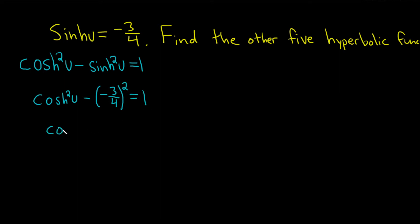So we have cosh²(u) minus. When you square this, because it's negative, it's going to become positive. So you square the 3, so you get 9, and square the 4, so you get 16. That's equal to 1. Now we're going to add this to both sides, so plus 9/16, plus 9/16.